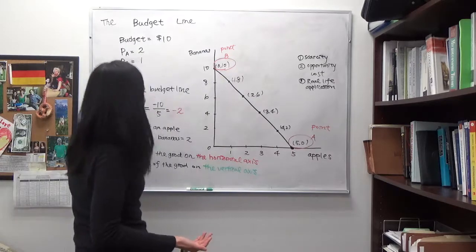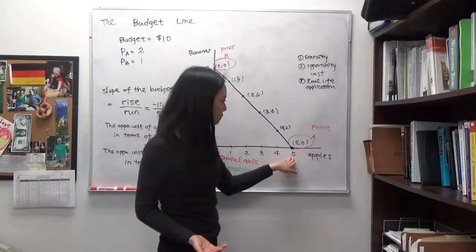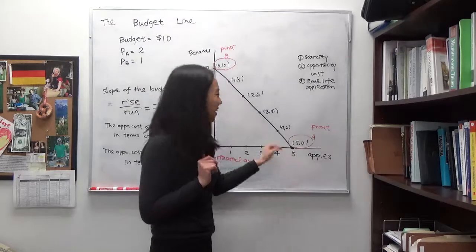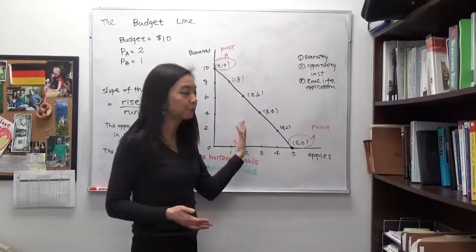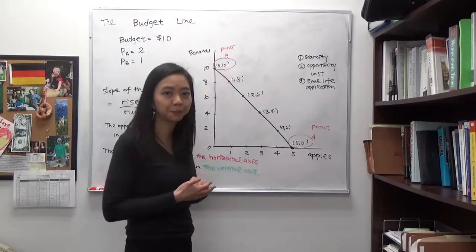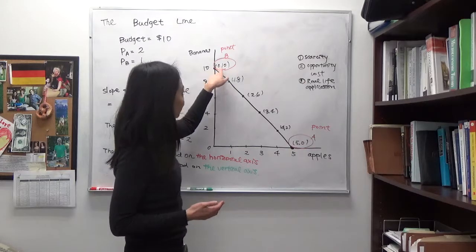If we buy no bananas but only apples, then we buy 5 apples and no bananas. And if we do the other way around, we buy only bananas and no apples, then you have 0 apples and 10 bananas.